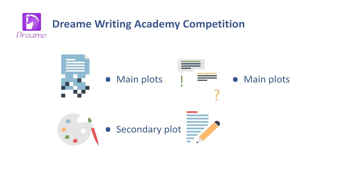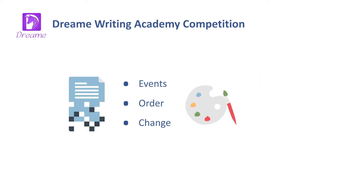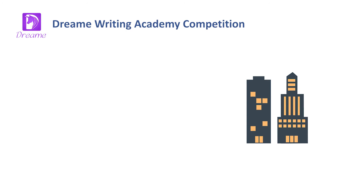Secondary plots show writers what specific content to write on every page. In regards to secondary plots, there are three key words: scene, action, and conflict. These three words suggest what events will happen to some people in certain scenes.